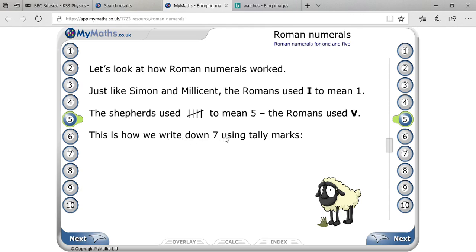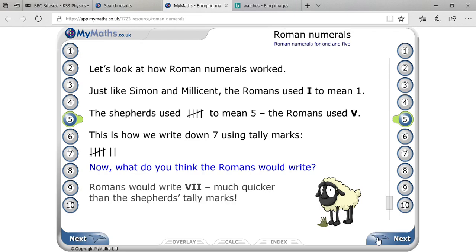This is how we write 7 using tally marks. If you would like to write that in tally marks, so 4 lines, 1 slant line and 2 standing lines. Romans would write 7 as V and I, I. V is for 5, I means 1 and I means 1.